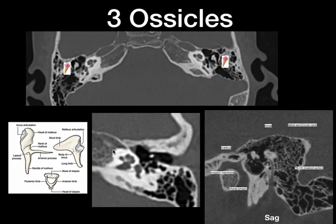First, coming to the three ossicles — the malleus, incus, and stapes. These are the three ossicles with their anatomical parts labelled. In the axial section you can remember the ossicles as the ice cream cone appearance, two dots, and two dashes. If you are seeing all three in different planes, it means the ossicles are intact and in place.